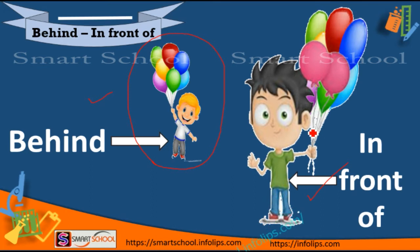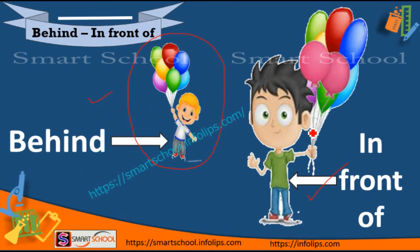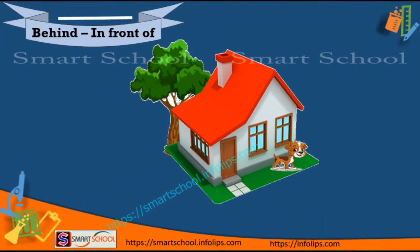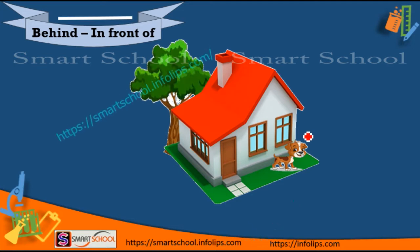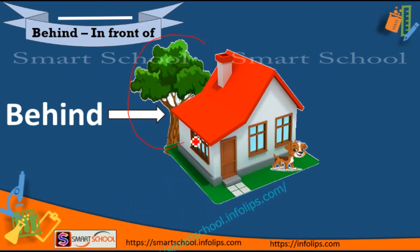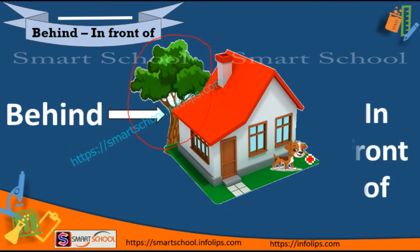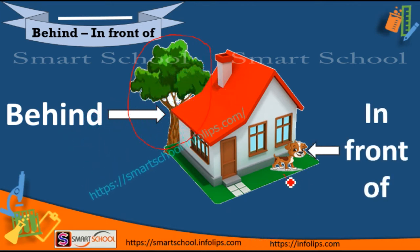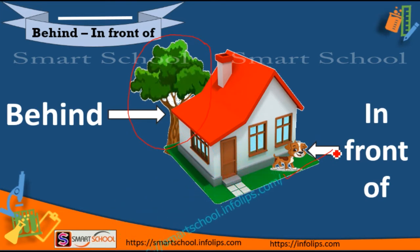Let's see another example. Now, students, tell me who is behind and who is in front of. The tree is behind the house and the dog is in front of. This tree is behind the house and this dog is in front of the house.